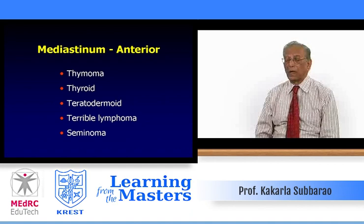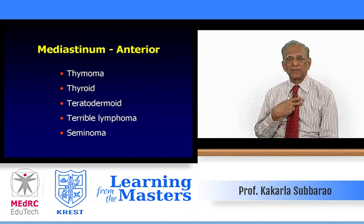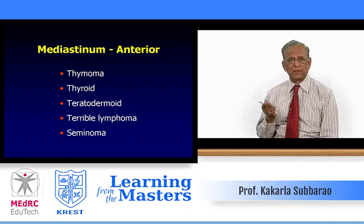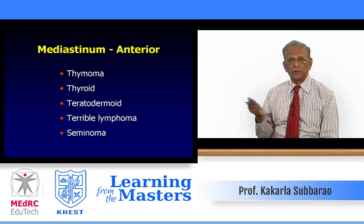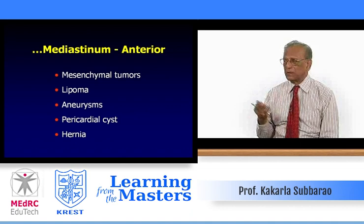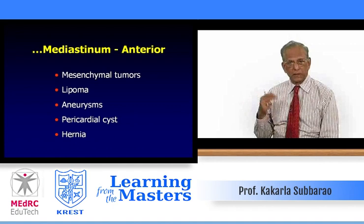If there is a mass in the anterior mediastinum, the possibilities are summarized as four T's: thymoma (most common), thyroid (a substernal thyroid, not as common in pediatrics), teratodermoid, and terrible lymphoma. Lymphoma is called 'terrible' because if hilar nodes extend all the way to the anterior mediastinum, the prognosis is poor. Other possibilities include seminoma, mesenchymal tumors such as lymphangioma, hemangioma, lipoma, and occasionally aneurysms (rare in childhood). Pericardial cysts occur in the anterior and inferior mediastinum around the cardiophrenic angle, and herniation through the foramen of Morgagni can also occur.